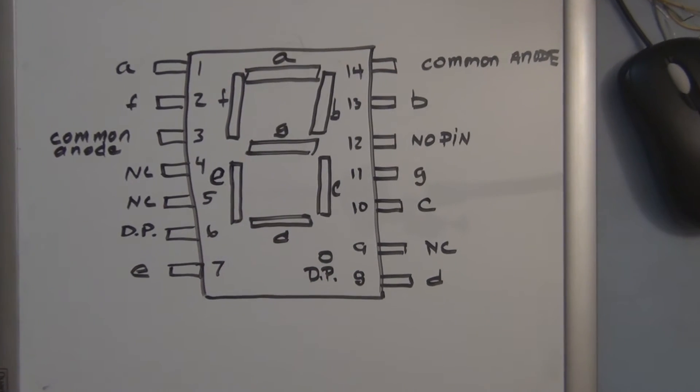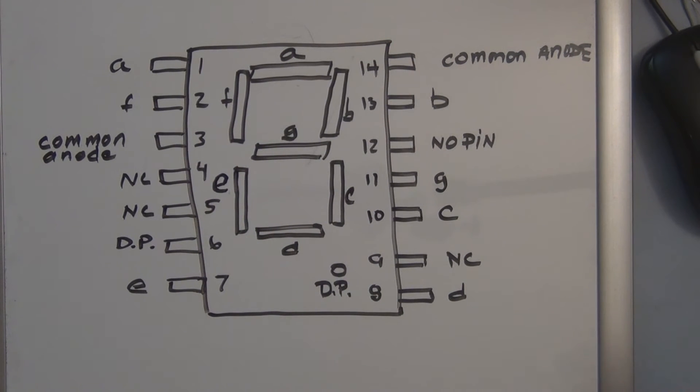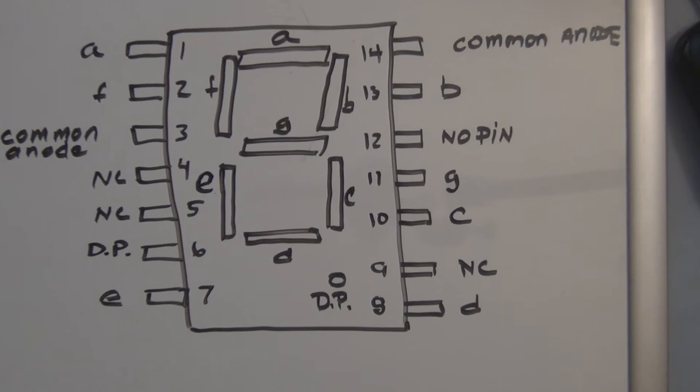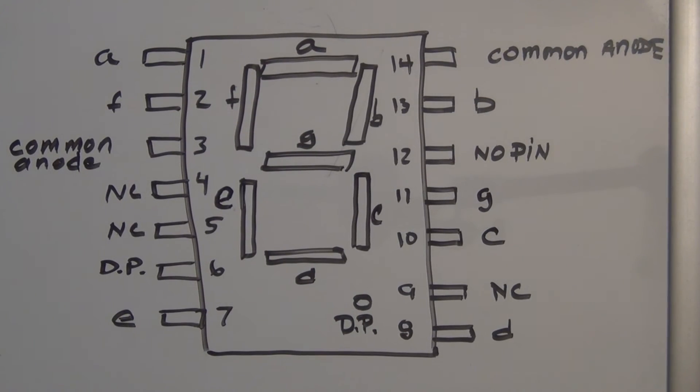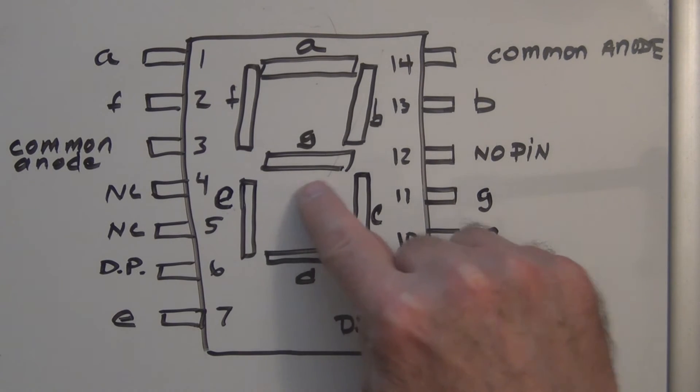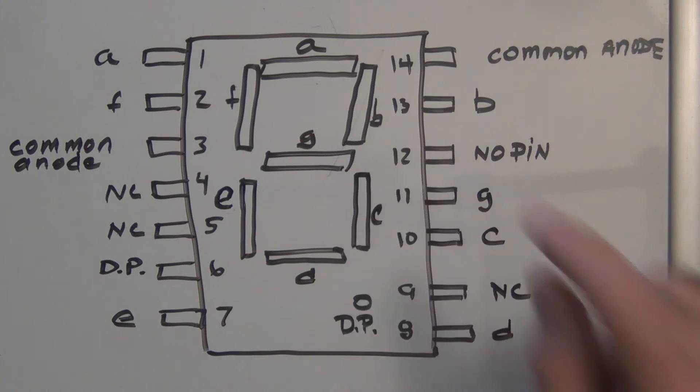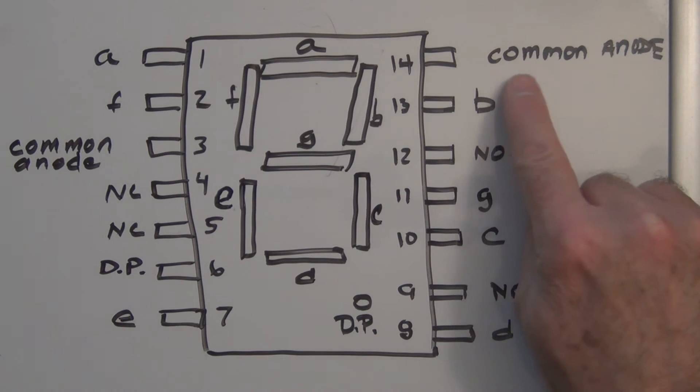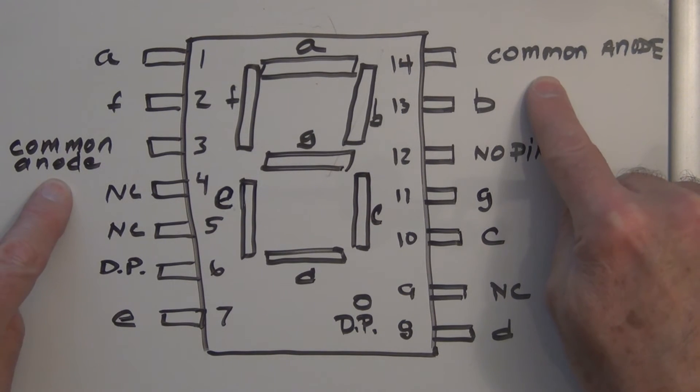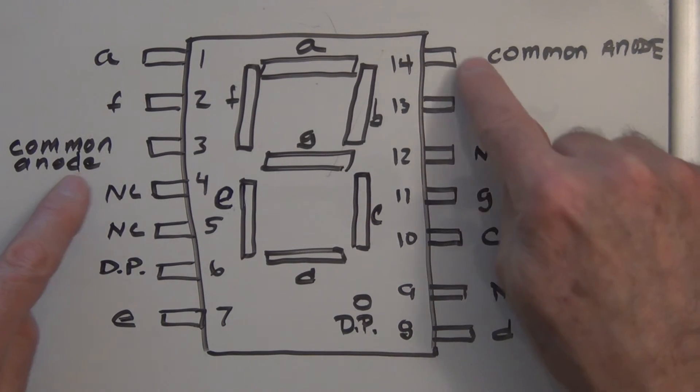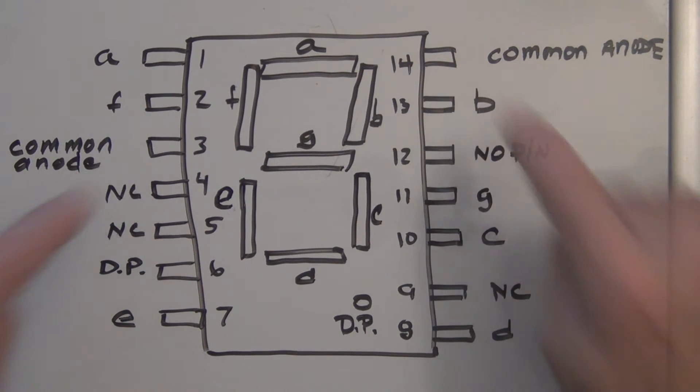But there is a standard here as to the labeling of these individual segments. So you can see this is A, B, C, D, E, F, and G. So that's the A segment, the B segment. And here this is a common anode, so pin 14 you would have plus 5 volts. Pin 3 is also tied—the plus 5 volts goes to pin 3 and pin 14. Pins 3 and 14 are tied together.